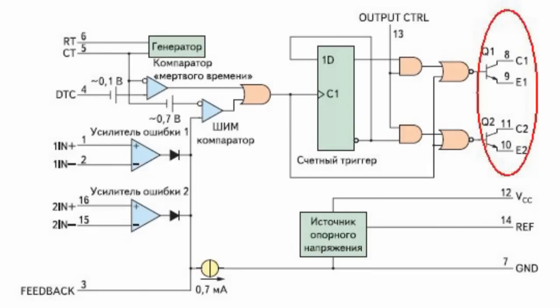If the reference voltage is applied to the mode switch input, the trigger directly controls two output transistors in phase opposition. The output frequency will be equal to half frequency of the generator.